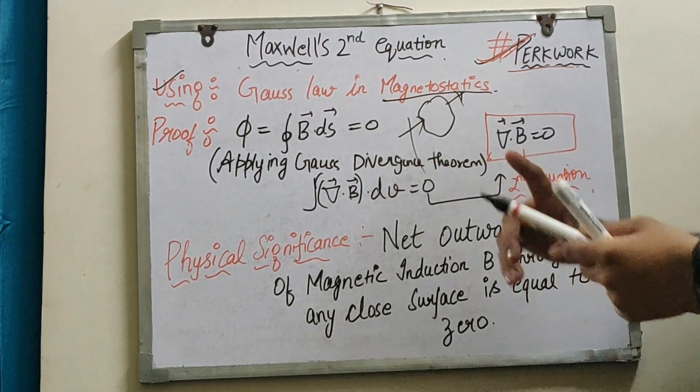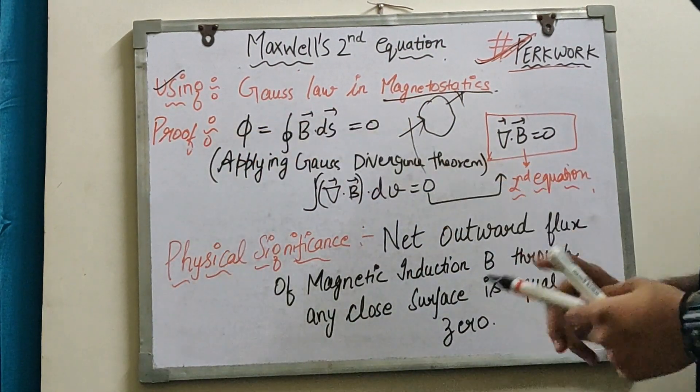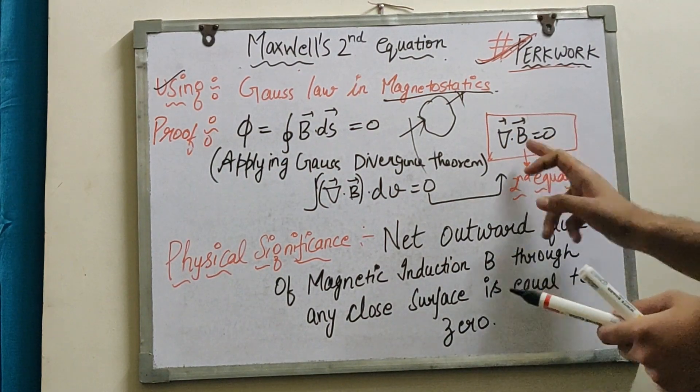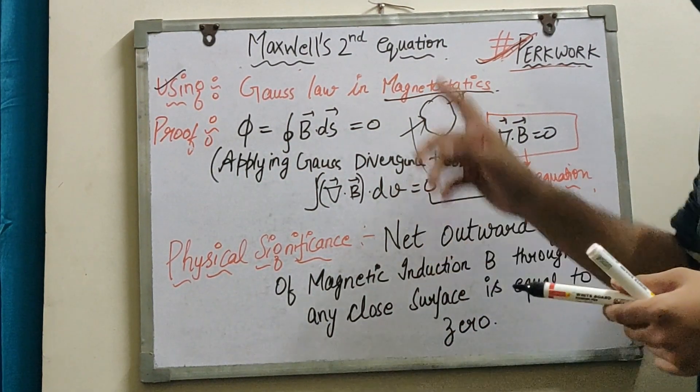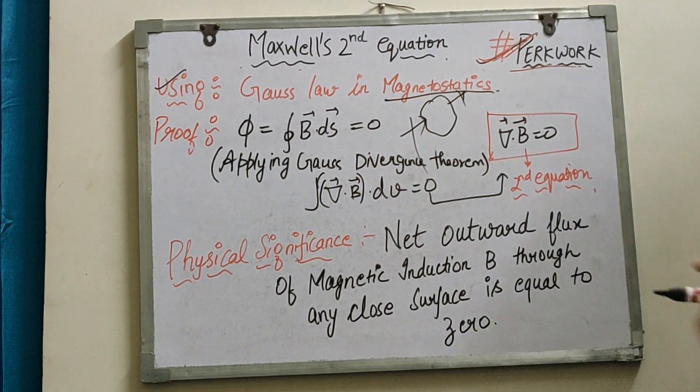Now what we need to prove is del·B = 0, which is Maxwell's second differential form equation. Let's see how to prove it by applying Gauss's divergence theorem.